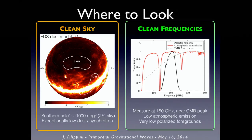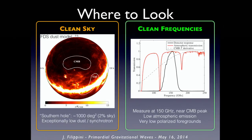We have to pick where we observe in a different sense too. We want to observe the cleanest sky possible, so we've picked a region called the southern hole — a few hundred square degrees, a small fraction of the sky, chosen to have exceptionally low emission in dust and synchrotron. This should be a relatively quiet region for anything but the CMB. We've also observed at 150 gigahertz — between the synchrotron and dust spectral features, where the atmosphere is very transparent and polarized foreground emission is expected to be quite low.